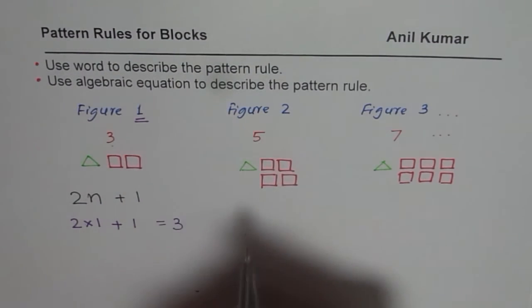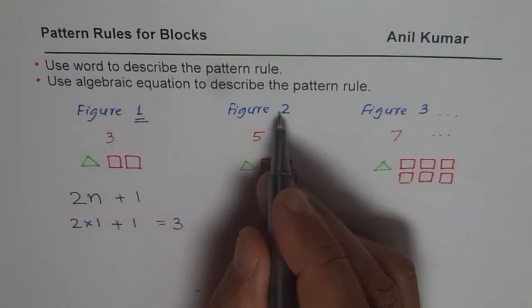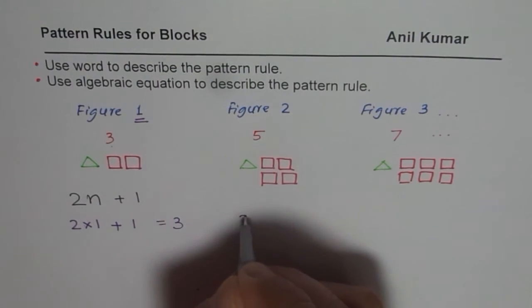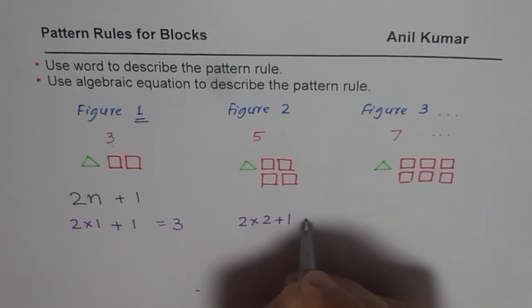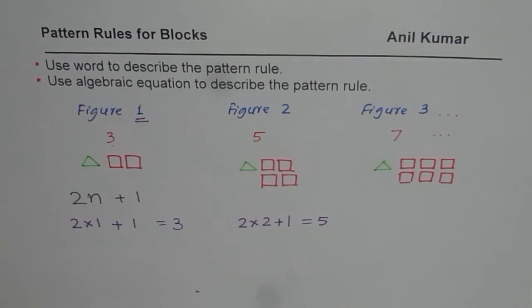In this case, it is figure number two. n is number of figure. So it would be two times two plus one. Two times two is four. Four plus one is five. It gives me the total number of blocks in figure number two.